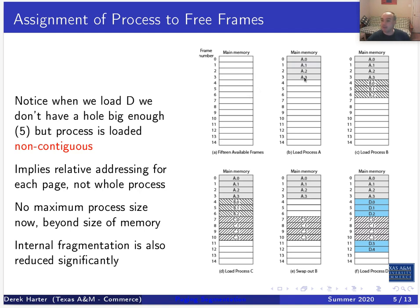In modern systems a more typical page size is more like a kilobyte. Process B fits into three pages, so we divide it into three pages and load it. Then C comes along as another approximately four-megabyte process and fits into memory. At time E, process B exits or is swapped out, leaving gaps that in dynamic partitioning would only fit a three or at most four-megabyte process.